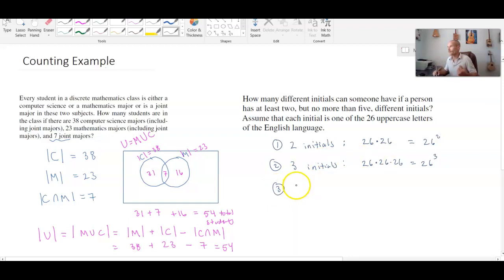Step three is to consider people who have four initials, and that's going to be 26 to the fourth possibilities. And for five initials, there are 26 to the fifth possibilities.